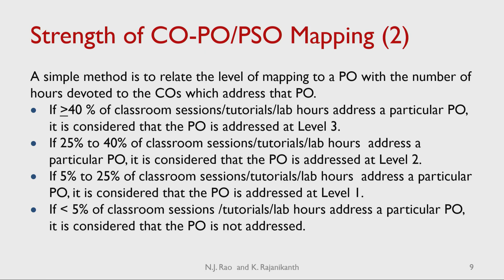For example, a particular institute may decide that the mapping is at level three only when more than 60% of classroom sessions, tutorials, and lab hours address a particular PO — that is perfectly fine. These are all subjective judgments and any reasonable numbers can be used. The only requirement is that the entire institute must follow one single process.